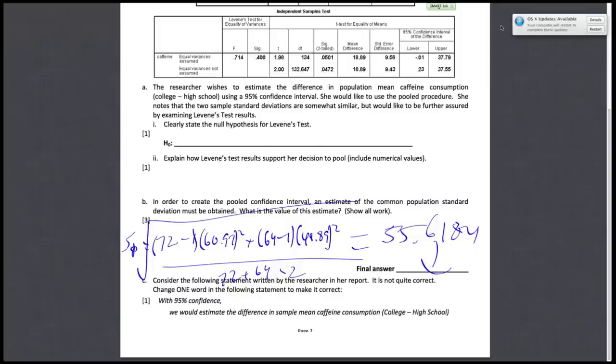And lastly we'll do Part C. Consider the following statement written by the researcher in a report. It is not quite correct. Change one word in the final statement to make it correct. So the original statement reads: with 95% confidence we would estimate the difference in sample mean caffeine consumption, college minus high school, to be between negative 0.01 to 37.79 mg.